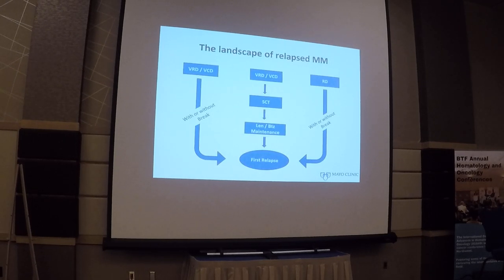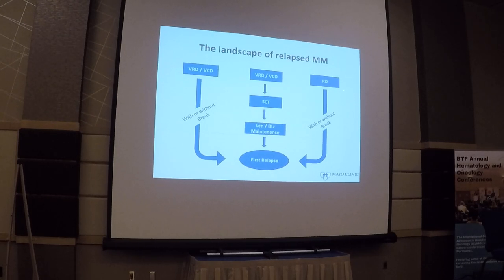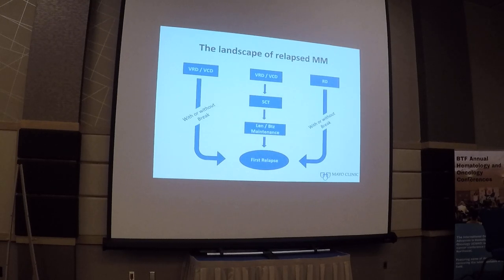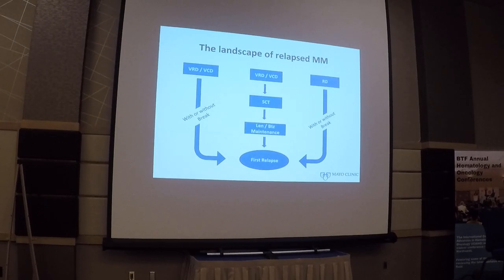So where do we find our patients at first relapse today? They could have reached it through three pathways: transplant-ineligible patients may have gotten lenalidomide-dexamethasone without a break; transplant-eligible patients would receive VRD or VCD induction, stem cell transplant, and lenalidomide maintenance; or patients who deferred transplant went on VRD induction and then continued on len maintenance. The common theme is that most patients in our clinic today are likely to be lenalidomide-refractory at first relapse, and some may also be refractory to bortezomib.